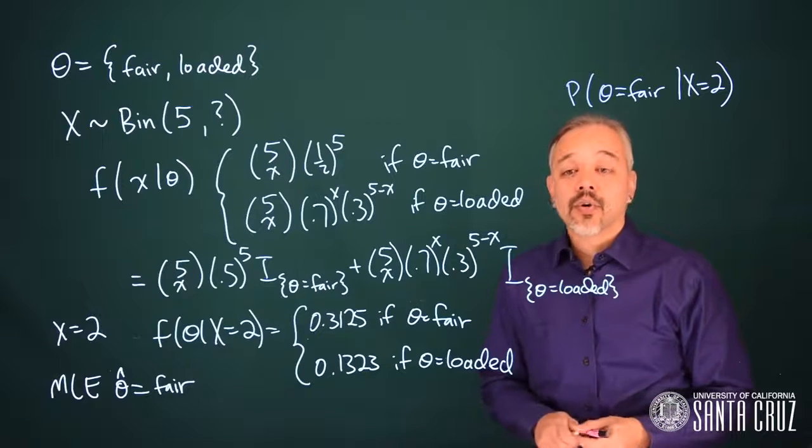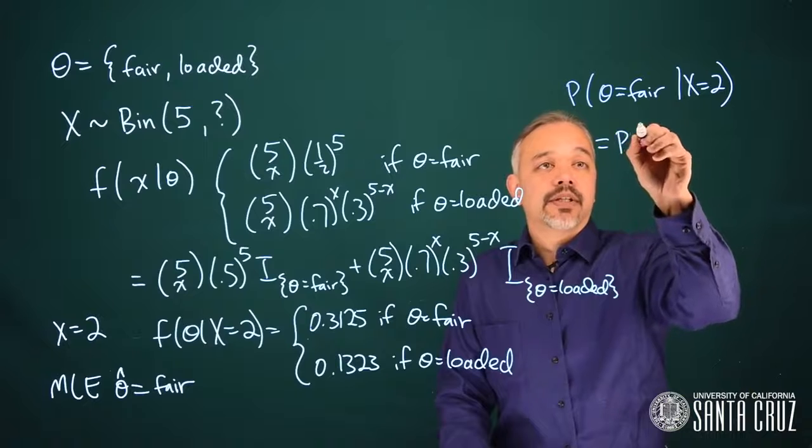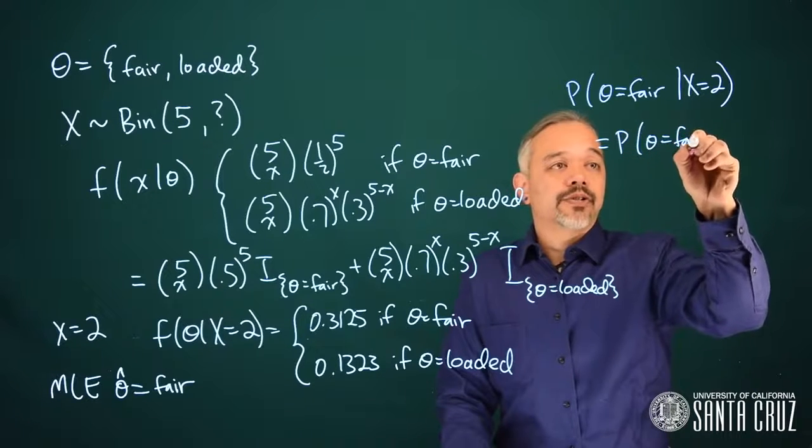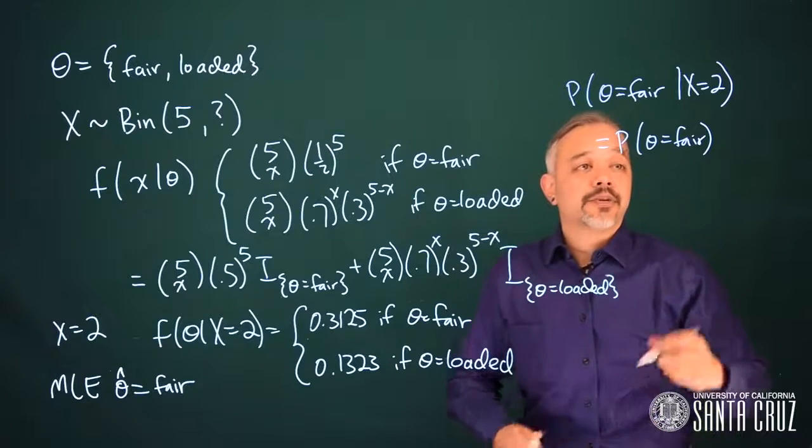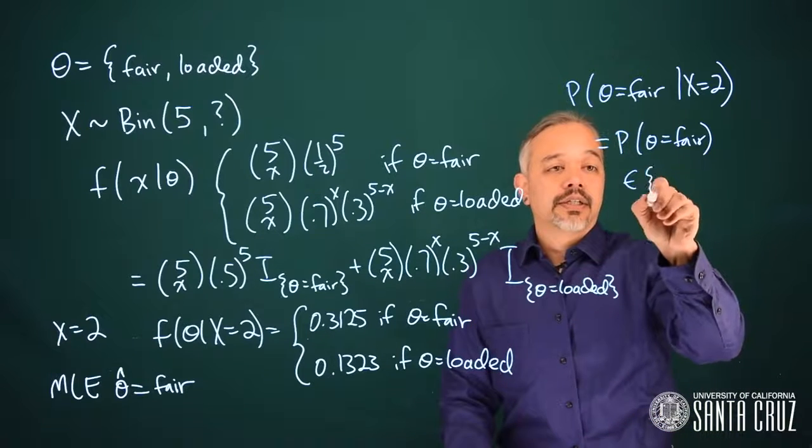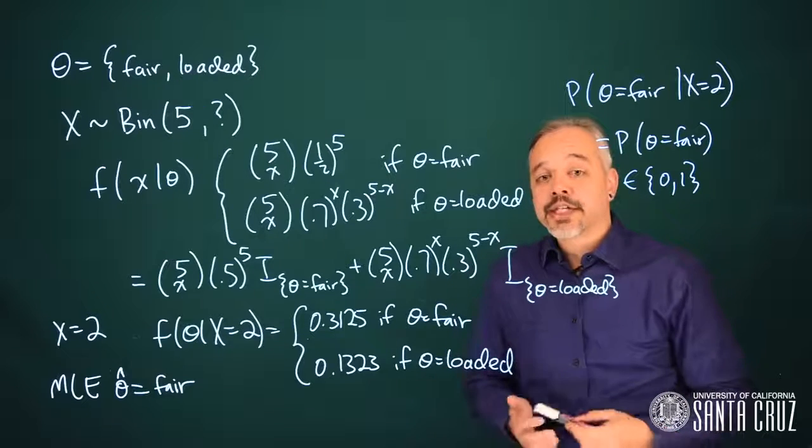It either is the fair coin, or it's the loaded coin. In this case, the probability that's fair given x equals two is just the probability that it's fair because it's a fixed coin, and this probability is either zero or one. This is not a particularly satisfying answer.